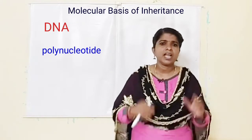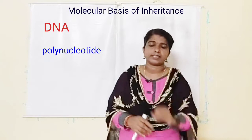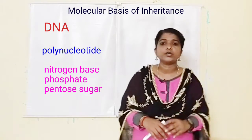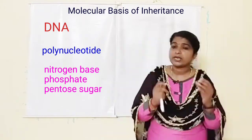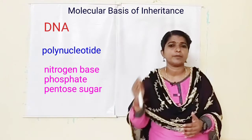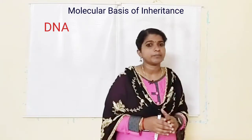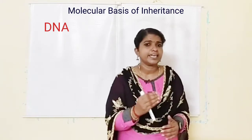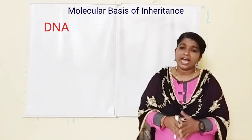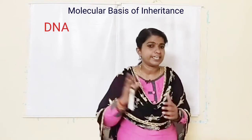In each nucleotide there are three things: one nitrogen base, a phosphate group, and a pentose sugar. Pentose sugar may be ribose or deoxyribose sugar. In RNA it is ribose sugar; in DNA it is deoxyribose sugar. Nitrogen bases may be purines or pyrimidines.